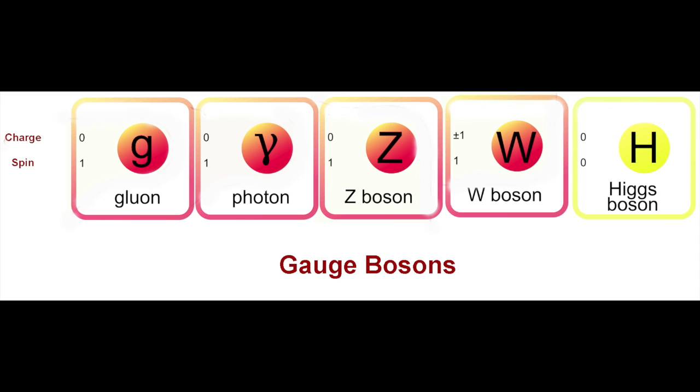Photons are the force carriers of the electromagnetic field. W and Z bosons are the force carriers involved with the weak force. The interaction of these bosons with the Higgs or the Higgs field is responsible for their mass.